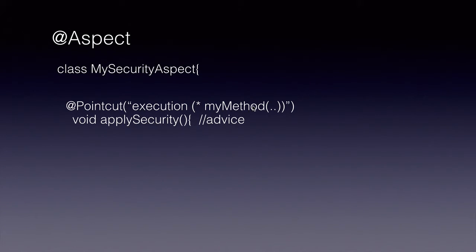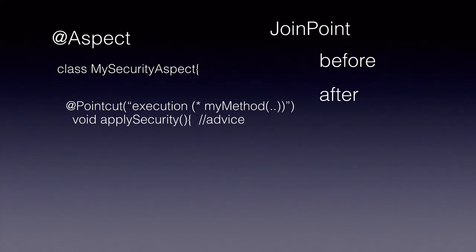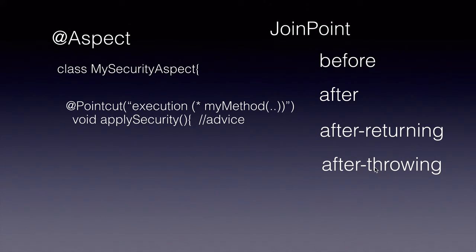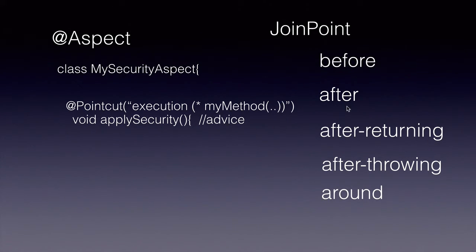While using the Spring framework, the join points could be before a method, after a method, after a method returns, after a method throws an exception, and finally around. Around works like before and after — it is a combination of both. So if we use around, that advice will be applied both before a method gets called and after a method gets called.